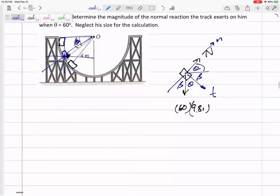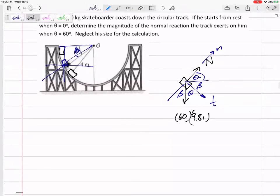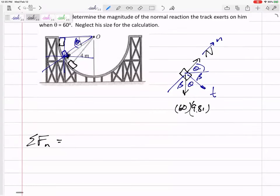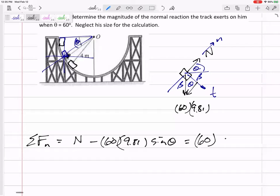All right. So now I am ready to sum the forces in the normal direction and sum the forces tangential. So sum the forces in the normal direction: N minus 60 times 9.81 times sine theta equals M times A normal. A normal is V squared over rho.